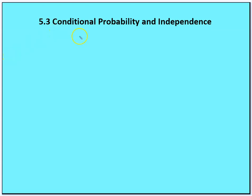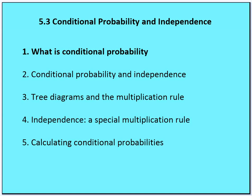Welcome to our last section of Chapter 5 on Probability. We're going to talk about Conditional Probability, Independence, and Dependence. There are five things to cover: what is conditional probability, conditional probability and independence, tree diagrams and the multiplication rule, independence, dependence, and a special multiplication rule, and calculating conditional probabilities using relative frequencies, marginal frequencies, and conditional frequencies.